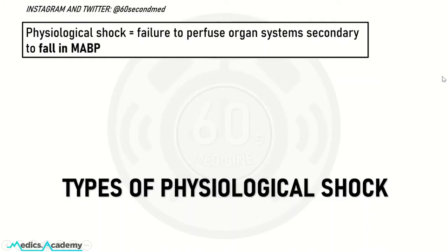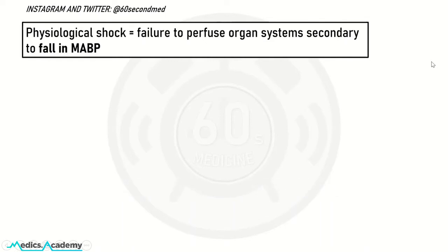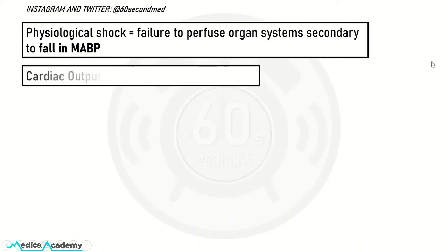A quick presentation on the different types of physiological shock. Physiological shock is defined as the failure to perfuse organ systems secondary to a falling mean arterial blood pressure. It's important to think about cardiac output, which is heart rate times stroke volume.